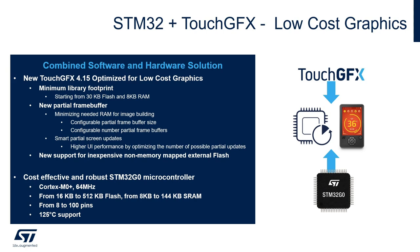It offers minimum library footprint starting from 30 kilobytes of flash and 8 kilobytes of RAM. It has a new partial frame buffer which permits minimizing needed RAM for image building, with configurable partial frame buffer size and configurable number of partial frame buffers. It also offers smart partial screen updates for higher user interface performance. There is new support for inexpensive non-memory mapped external flash.